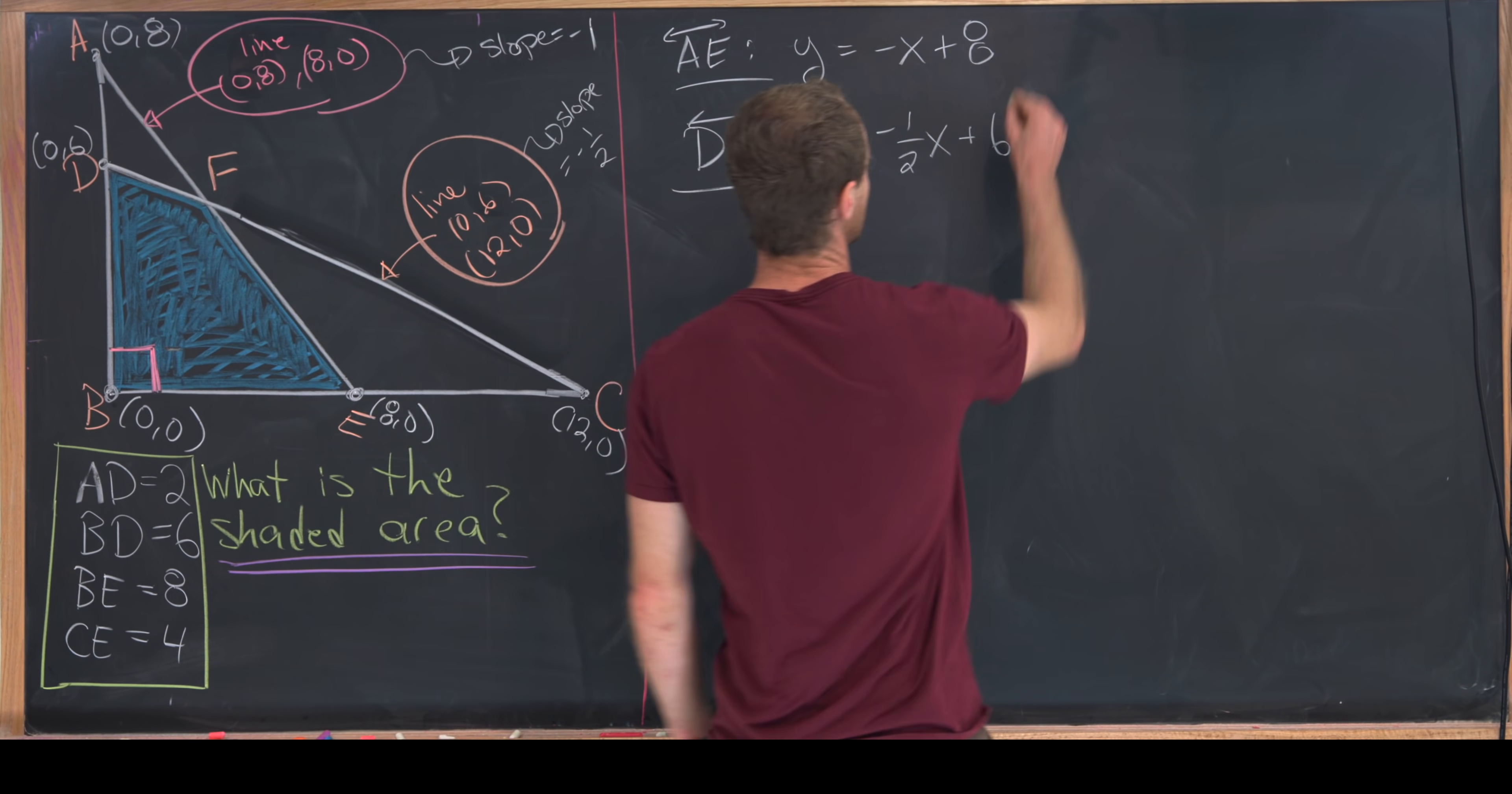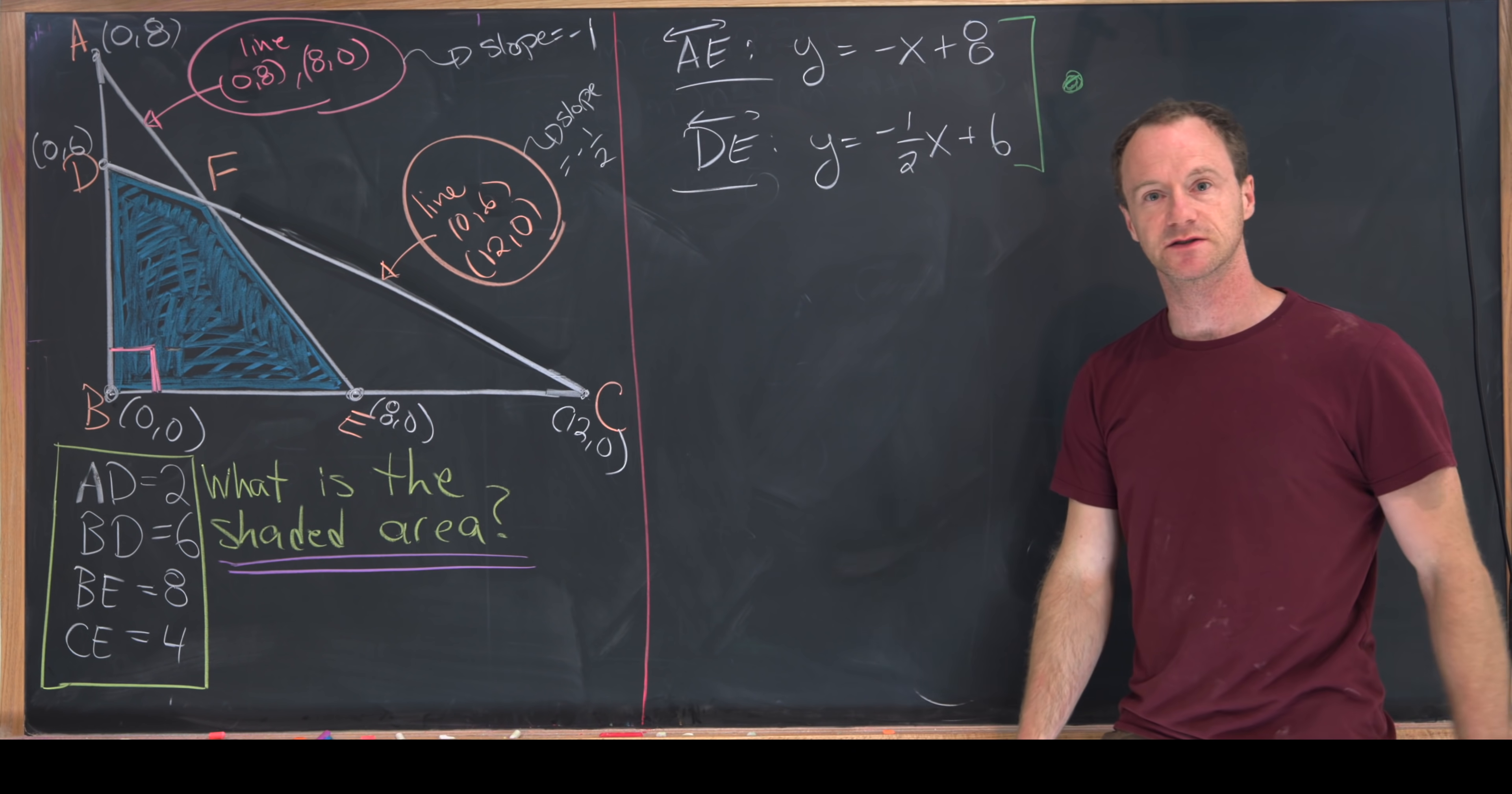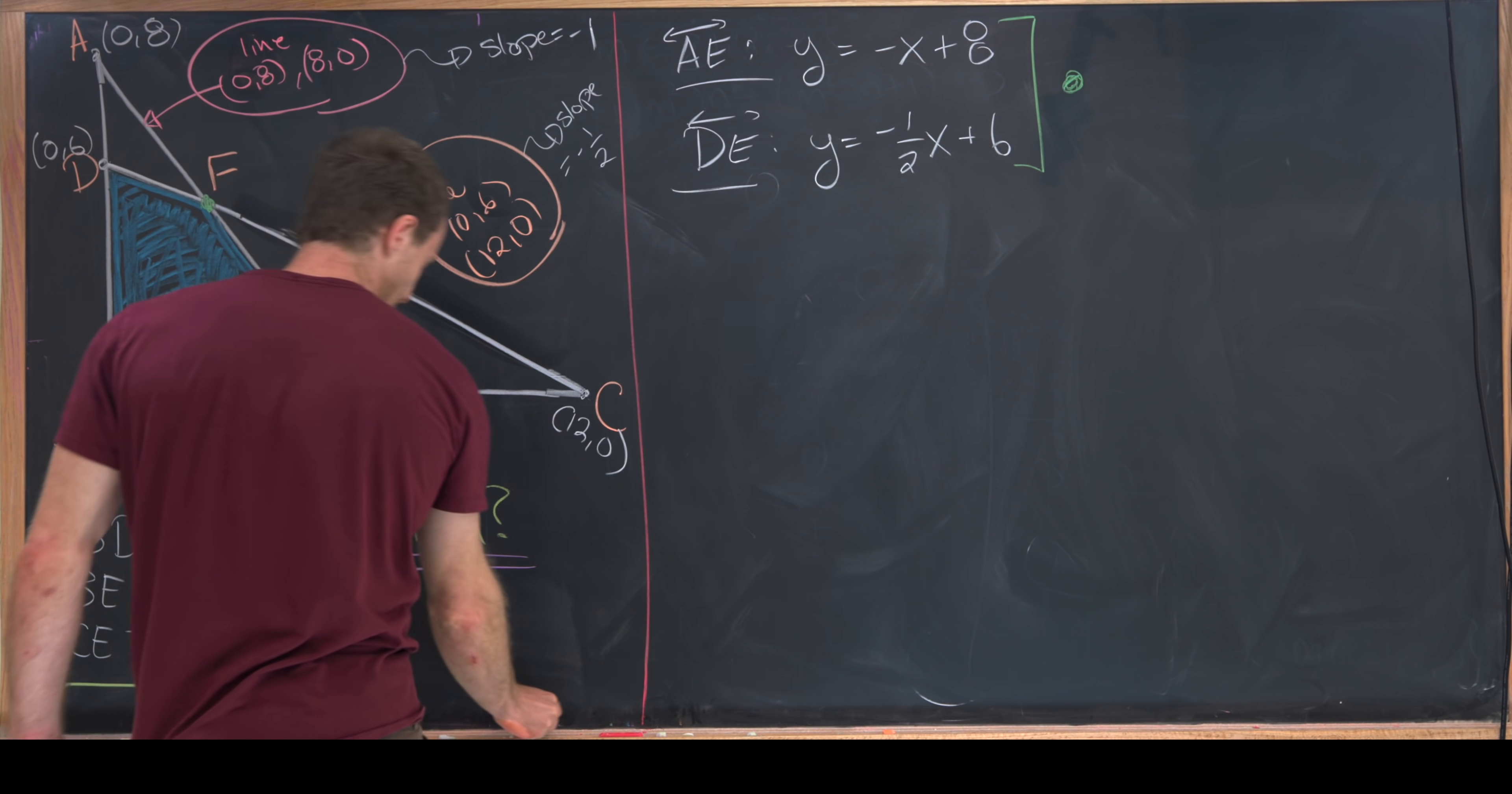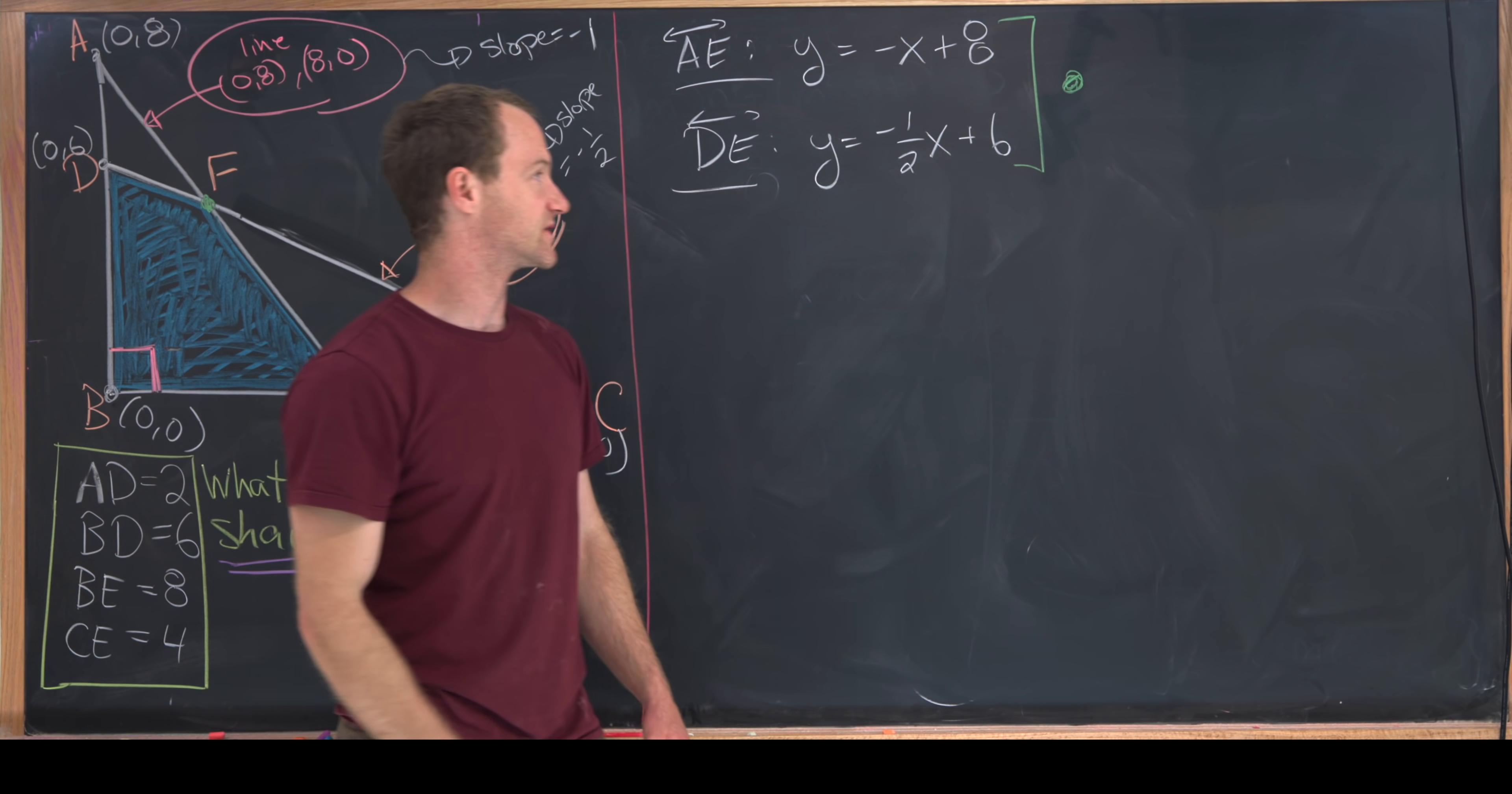Now we can see that if we look at the intersection of these two lines, we can gain the coordinate for this point F, which is the only missing coordinate. So let's find out where these intersect.